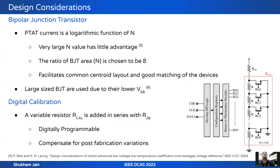The bipolar junction transistors are selected as follows. The related current is a logarithmic function of N, so a very large value of N has little advantage. The BJT area ratio N is chosen to be 8, which also facilitates common centroid layout and good device matching. Large BJTs are used due to their lower VEB. A digital calibration resistor R-Cal is added in series with R2B, digitally programmable via on-chip SPI logic, used to compensate for post-fabrication variation.